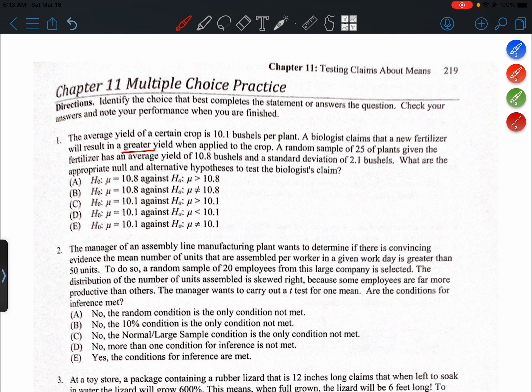A random sample of 25 plants given the fertilizer has an average yield of 10.8 bushels and a standard deviation of 2.1 bushels. What are the appropriate null and alternative hypotheses to test the biologist's claim?